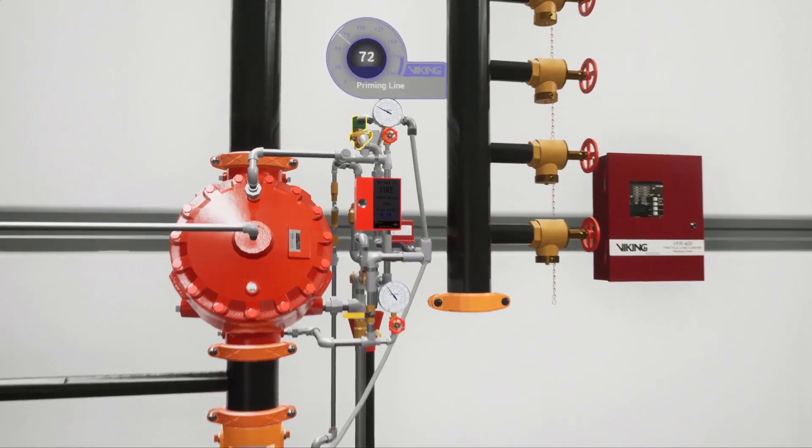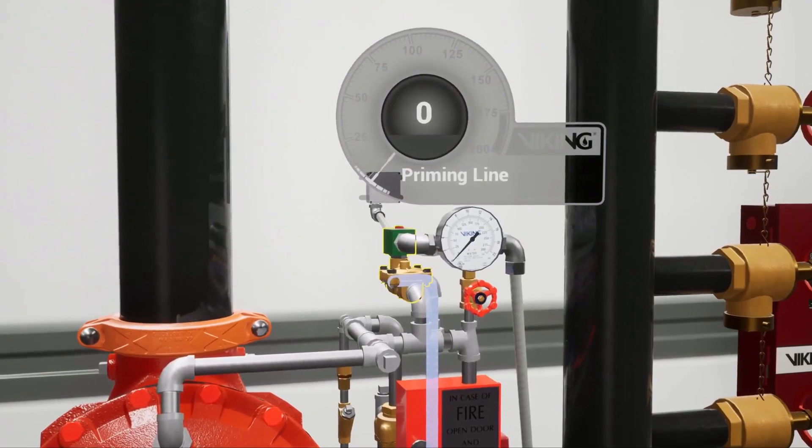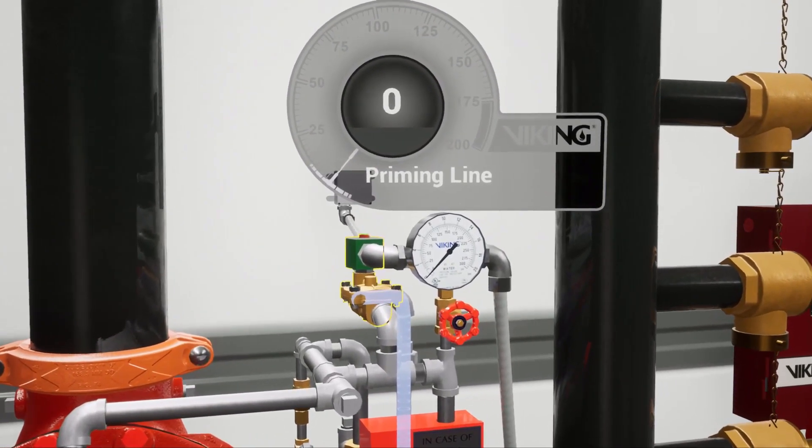The electric solenoid valve is powered open, releasing water pressure within the priming chambers of the deluge valve and the concentrate control valve.